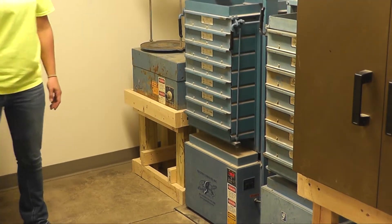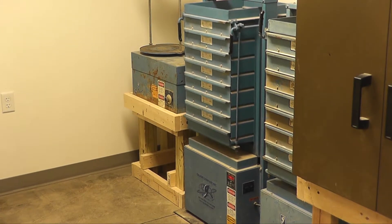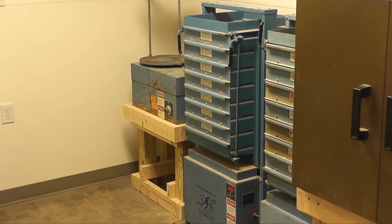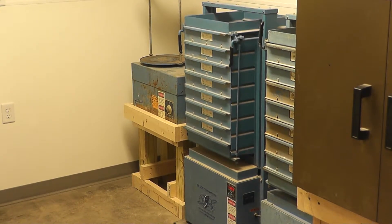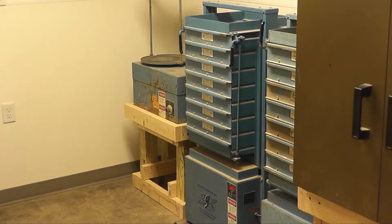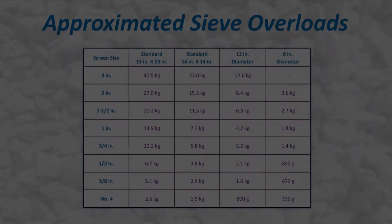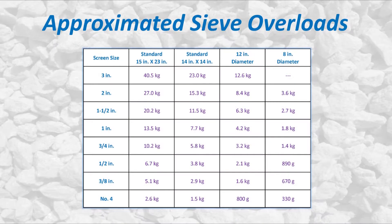Depending on the type of sample, an appropriate shaker and sieves shall be selected for the shaking procedure. Every effort should be made to avoid overloading the sieves. The weight retained on each sieve may not exceed the allowable amount indicated in the following table.